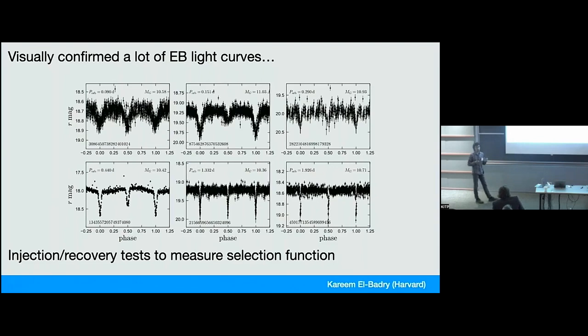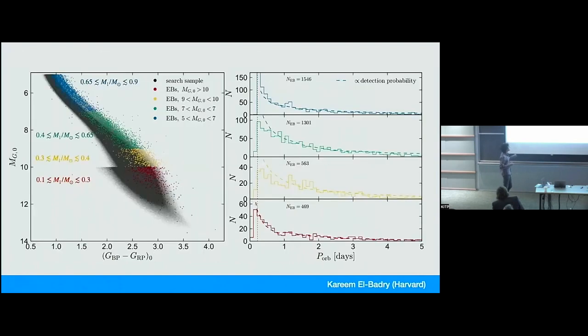It's basically just set by geometry what eclipses and what doesn't. It's different from, say, if I wanted to do the same kind of test with CVs where what I detect depends on how bright something is, which depends on the mass transfer rate. So there are lots of parts of the problem that I think are simpler in this case. So at the end I get a sample of detached eclipsing binaries with light curves like that all across the lower HR diagram.